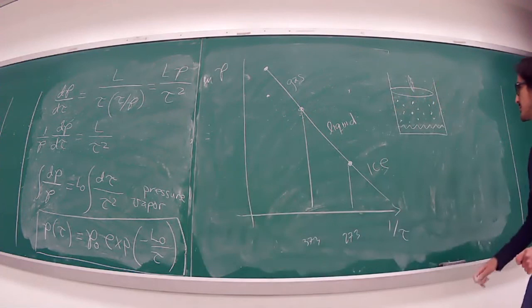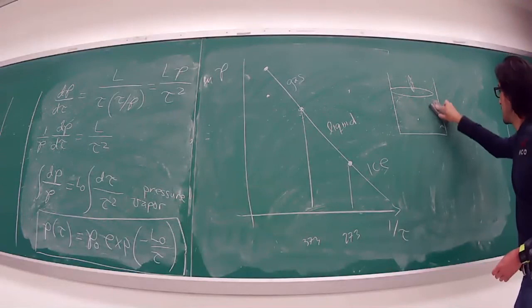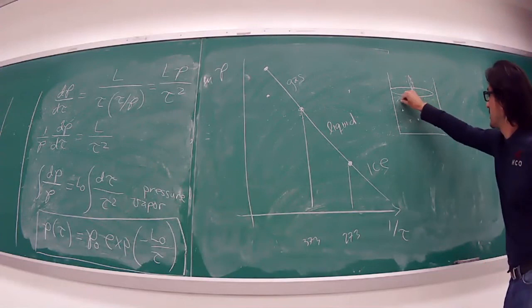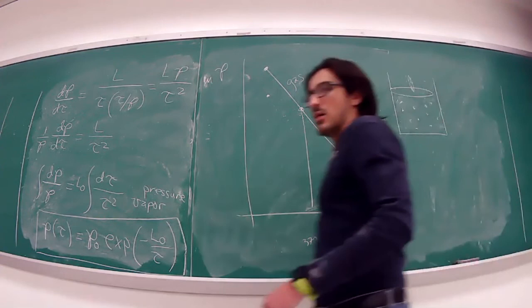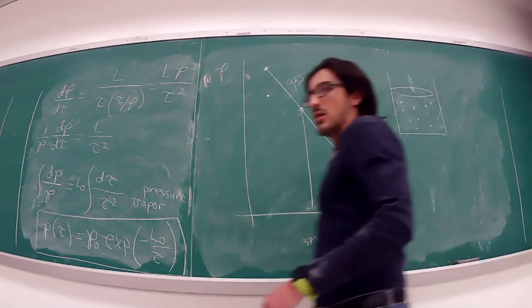As temperature increases, the vapor pressure tells you how many molecules are in the gas phase — very few at low temperature, more as it becomes liquid, and eventually just hot gas past the critical point. The number of molecules in each phase is uniquely determined by this equation. That concludes today's lecture — sorry for the technical issues, but isn't this pretty neat?